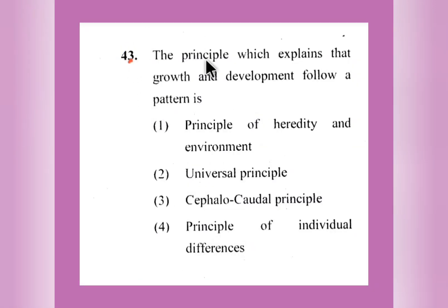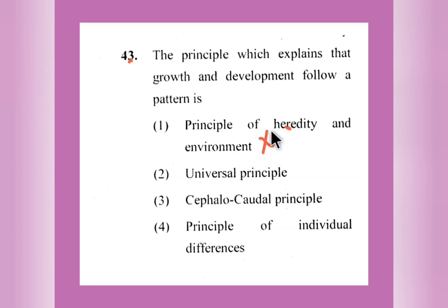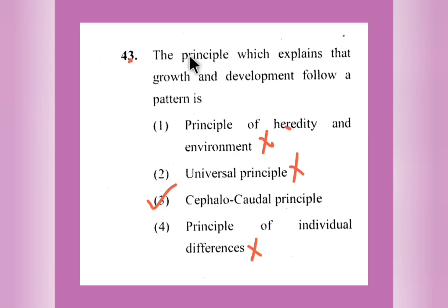Question number 43: The principle which explains that growth and development follow a pattern is — heredity and environment principle, universal principle, cephalocaudal principle, or principle of individual differences? Heredity and environment is a separate concept. Universal principle and individual differences also do not apply. The cephalocaudal principle explains growth and development following a pattern. Option number 3 is the right answer.